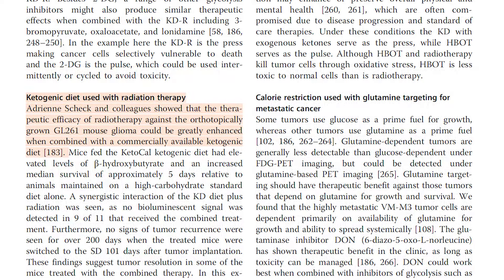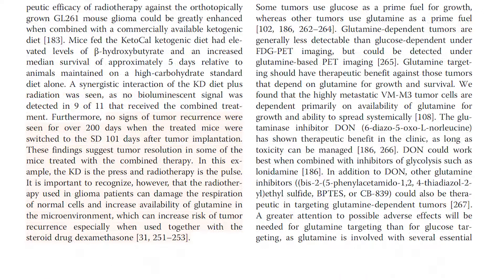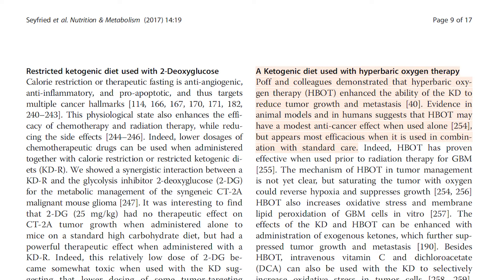Ketogenic diet used with radiation therapy: Adrian Scheck and colleagues showed that the therapeutic efficacy of radiotherapy against the orthotopically grown GL-261 mouse glioma could be greatly enhanced when combined with a commercially available ketogenic diet. No signs of tumor recurrence were seen for over 200 days when the treated mice were switched to the standard diet 101 days after tumor implantation, suggesting tumor resolution in some of the mice treated with the combined therapy. In this example, the ketogenic diet is the press, and radiotherapy is the pulse. However, it is important to recognize that radiotherapy used in glioma patients can damage the respiration of normal cells and increase availability of glutamine in the microenvironment, which can increase risk of tumor recurrence, especially when used together with the steroid drug dexamethasone.